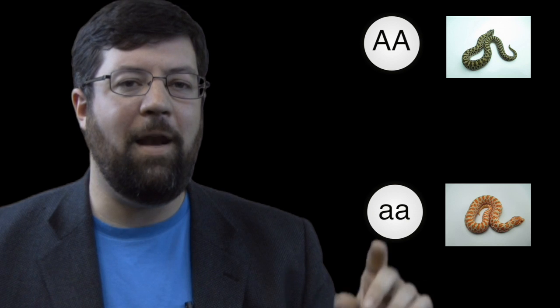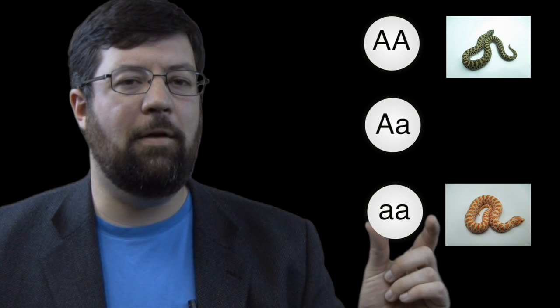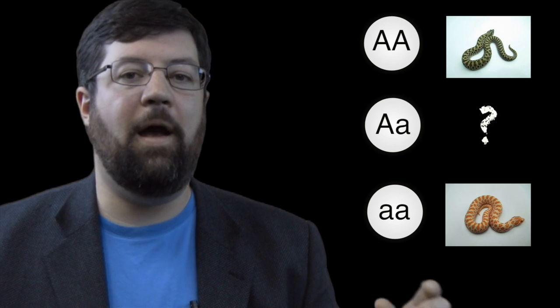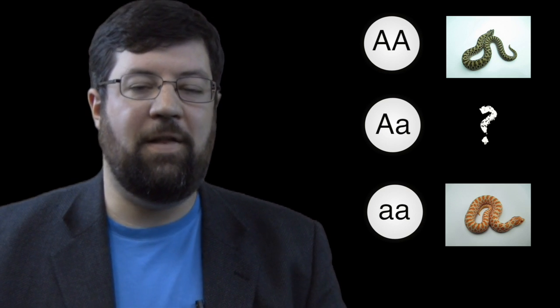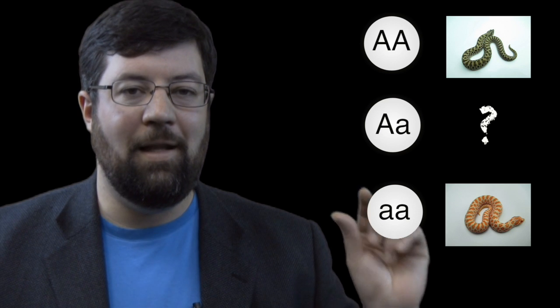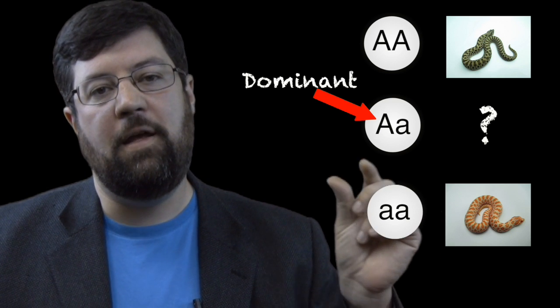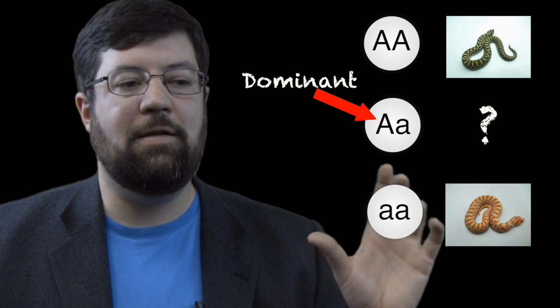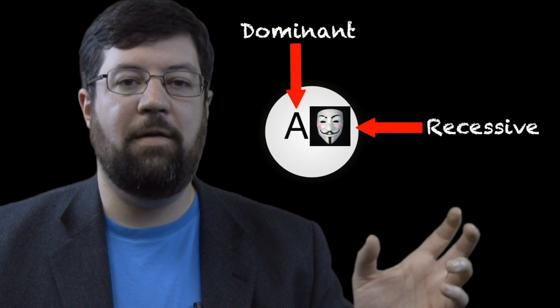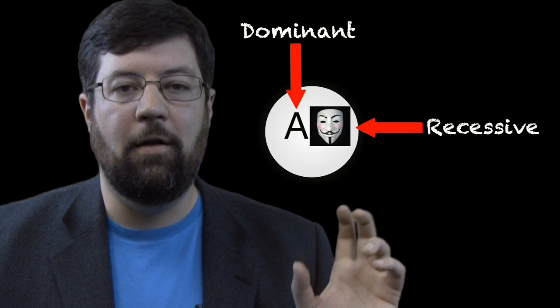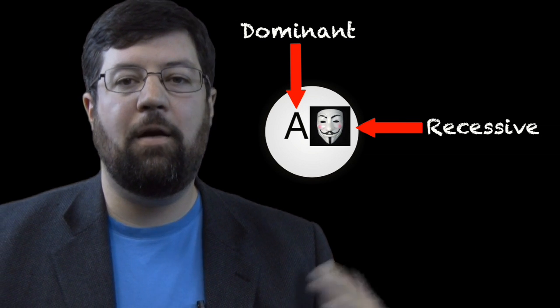So in this interaction here, we have one baby that has two normal copies, which is obviously going to be normal, because that's all the copies it has. And we have one baby with two albino copies, obviously going to be albino. But why is this baby in the middle looking normal? Why, you know, if it has one albino gene, why isn't it half albino, or why isn't it albino? And the reason for that is the normal allele in this particular gene is dominant over the albino allele. So it is masking the effects, or in this case, I think correcting the effects of the albino allele.